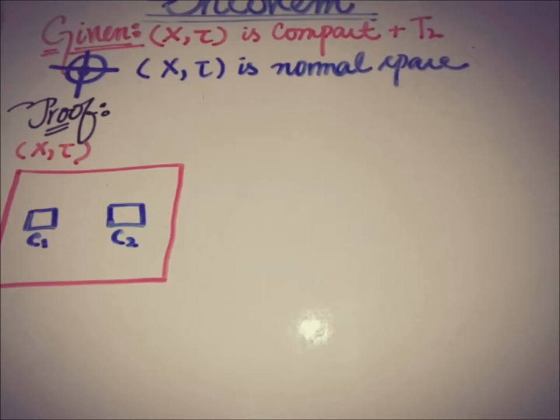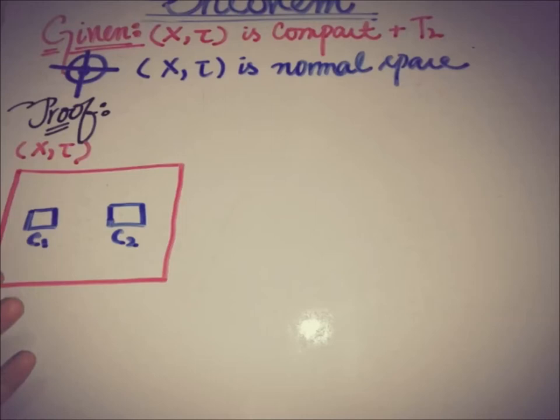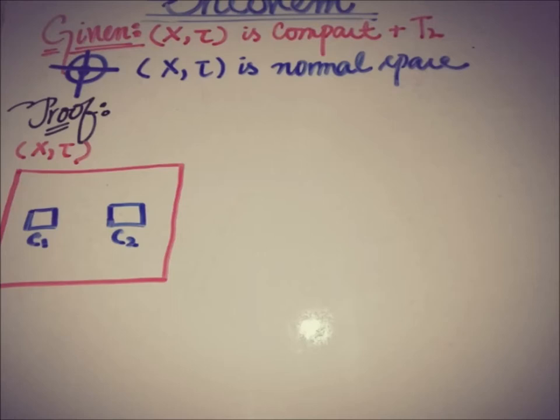Since C1 and C2 are closed sets in a compact Hausdorff space, by the property of compact spaces — because C1 is a closed subset of the compact space and C2 is also a closed subset — by definition, C1 and C2 are also compact subsets in themselves. Now we can use a property of a Hausdorff space and a compact subset in common.